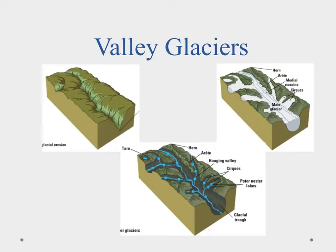If we look at a valley glacier, we can see that after the glacier has retreated or melted out, a lot of geologic features are left behind. We can have horns, which are really steep mountains like the Matterhorn in Switzerland. We can have arêtes, which are these really sharp cliffs. We can have cirques, which are little rounded bowls, or tarns, which are actual rounded depressions. We'll go through these in more detail inside your lesson.